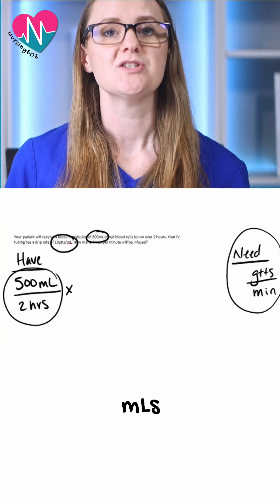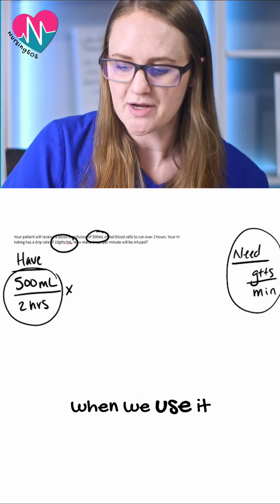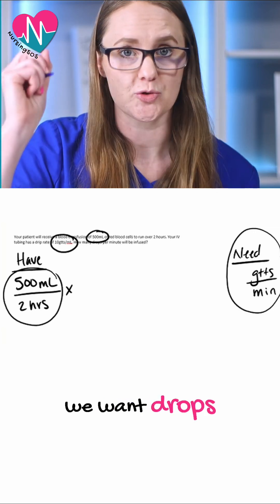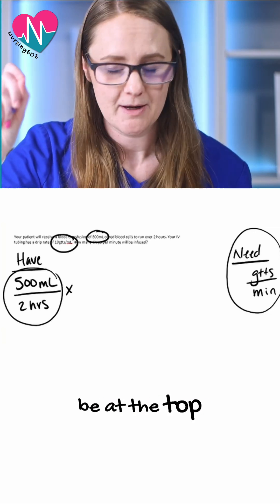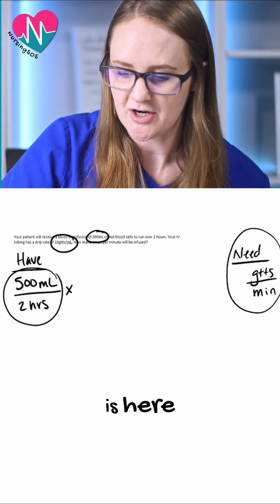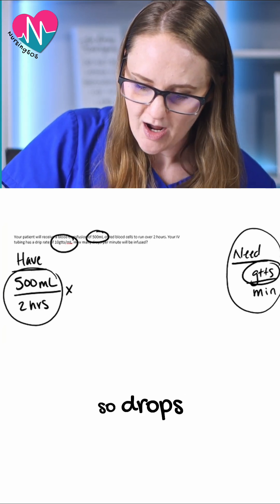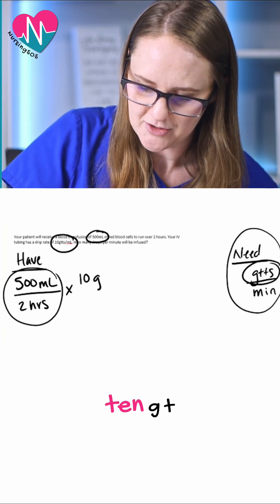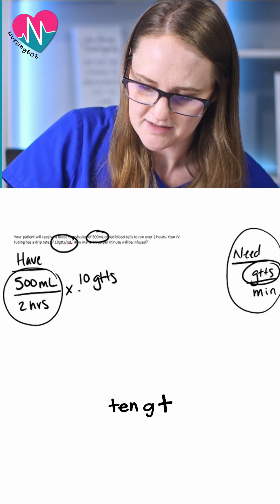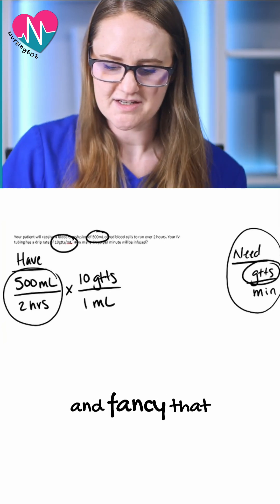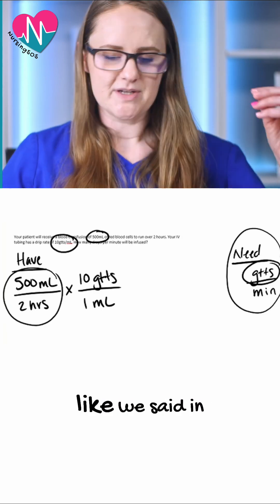When we use that, we will see that we can get our drops. We want drops to be at the top because that's where it is here, where we need it at the end. So drops, 10 gtts per one mL.